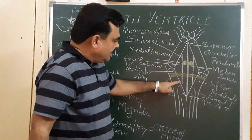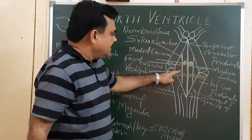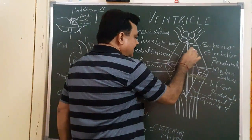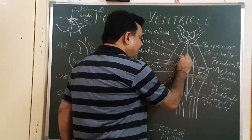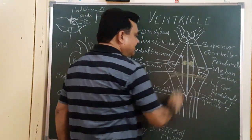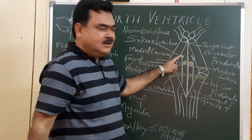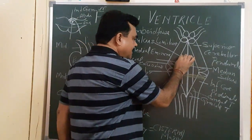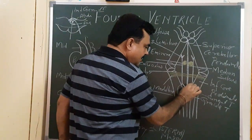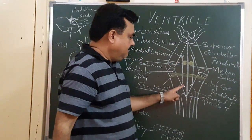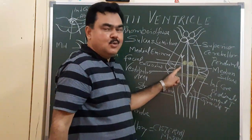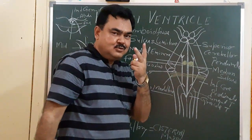Looking at the sulcus limitans — at its upper end it divides into two parts. Where it divides, there is a depression called the superior fovea at the upper end, and a depression called the inferior fovea at the lower end. So two foveae are present: the superior fovea at the upper end and the inferior fovea at the lower end.